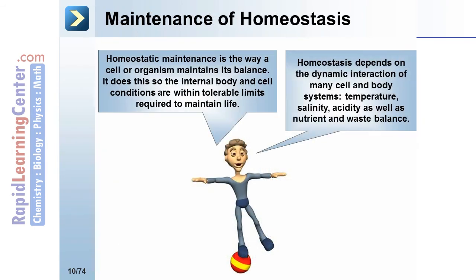Maintenance of homeostasis: Homeostatic maintenance is the way a cell or organism maintains its balance so that internal body and cell conditions are within tolerable limits required to maintain life. Homeostasis depends on the dynamic interaction of many cell and body systems, including temperature, salinity, acidity, as well as nutrient and waste balance.